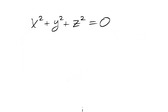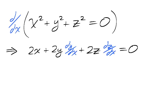Not all functions depend on two variables. The function x squared plus y squared plus z squared equals 0 describes a relationship between x, y, and z implicitly.